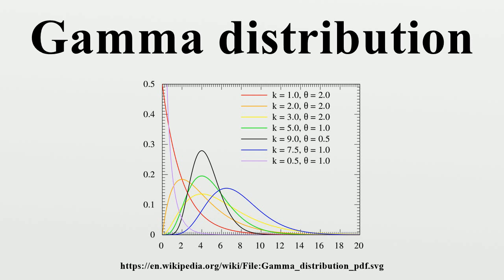Compound gamma: if the shape parameter of the gamma distribution is known but the inverse scale parameter is unknown, then a gamma distribution for the inverse scale forms a conjugate prior. The compound distribution, which results from integrating out the inverse scale, has a closed form solution known as the compound gamma distribution. If instead the shape parameter is known but the mean is unknown, with the prior of the mean given by another gamma distribution, then it results in a K-distribution.